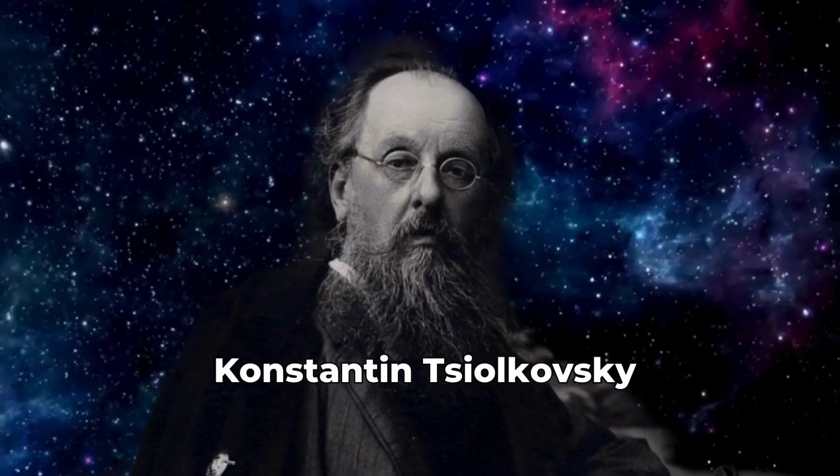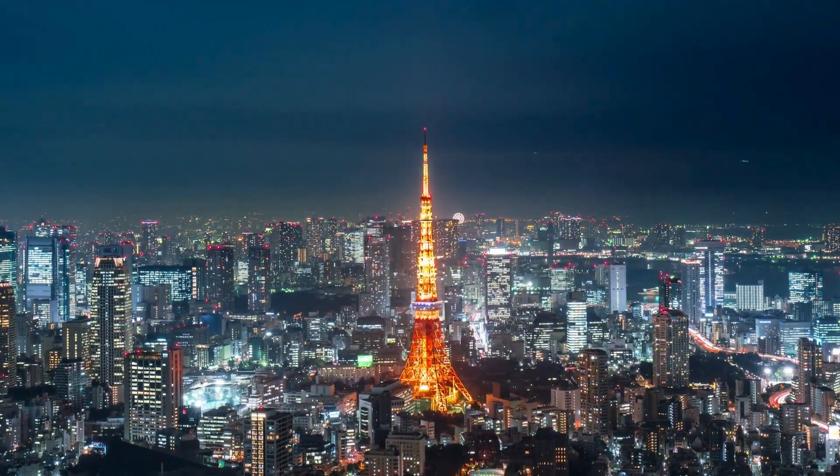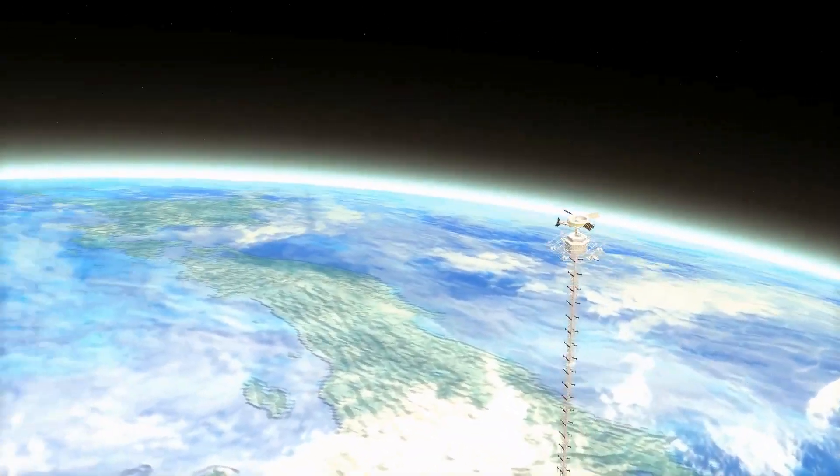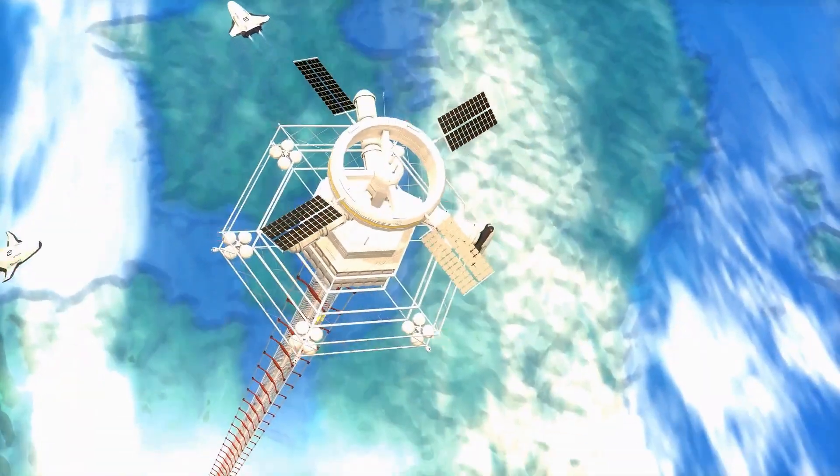In 1895, Russian rocket scientist Konstantin Tsiolkovsky, inspired by the Eiffel Tower, conceptualized a tower extending to geostationary orbit. The astronautics pioneer's vision was an Eiffel-like tower built from the ground up to the altitude of more than 22,000 miles.